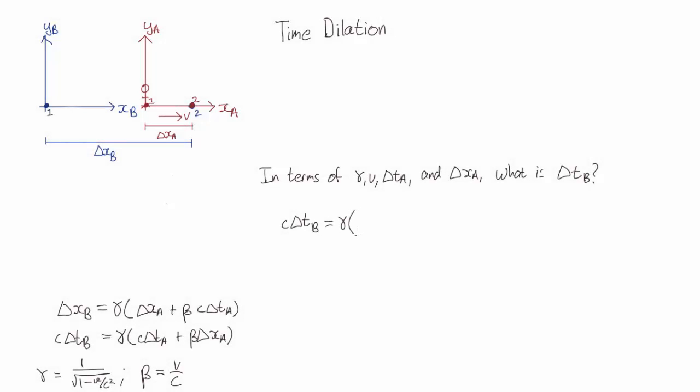So we just sub everything into our Lorentz transformation, and what we find is delta tb is gamma delta ta plus v over c squared delta xa.